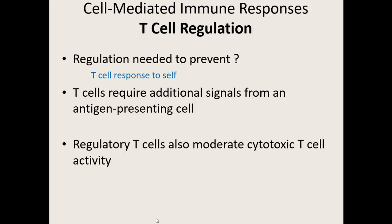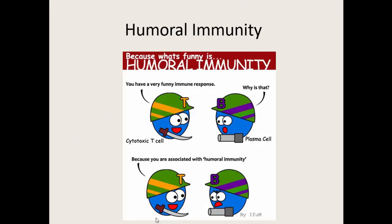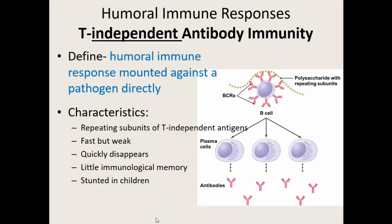Now we have our two branches: humoral immunity with B cells and cell-mediated immunity with T cells. The two branches can work together. There are two ways humoral immunity gets activated. The first — which we discussed last class — is called T-independent antibody immunity, meaning there's no help from T cells whatsoever. It's just the humoral branch with its B cells doing its own thing, mounted directly against the pathogen — no T cells interacting at all. This can be great; we can usually recognize T-independent antigens, it's a fast way to get rid of a pathogen.